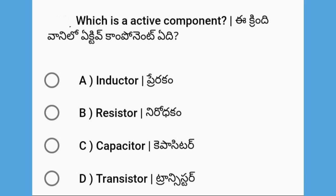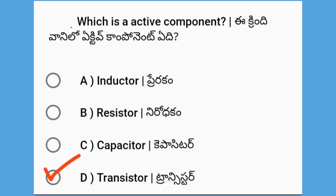Next, which is the active component? The options are inductor, resistor, capacitor, and transistor. The answer is transistor. Electronic components include active components, and the transistor is a basic active component.